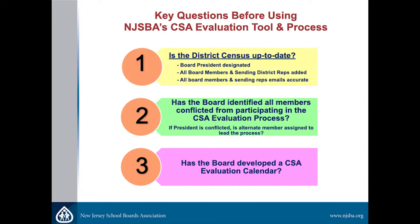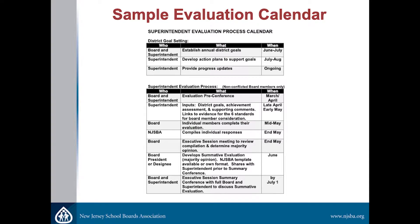Before we even get started, in New Jersey School Boards we have a census that's a roster of your board, and we need to make sure that census is up to date and all your new board members are on there. The compiled document, once the board is done, is tied to who is listed in the census as the board president, so that person has access to the document. One of the things the board should be doing is calendaring your work in this process to make sure we're giving it the time it needs.